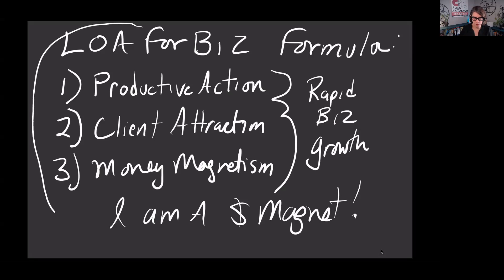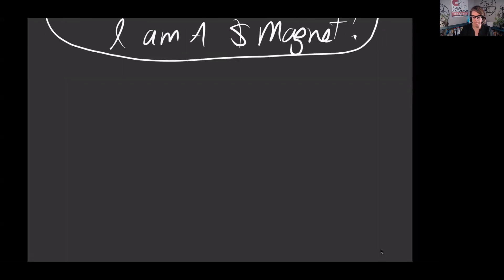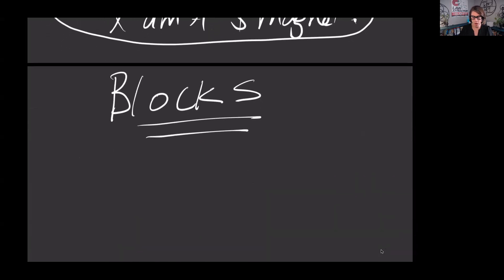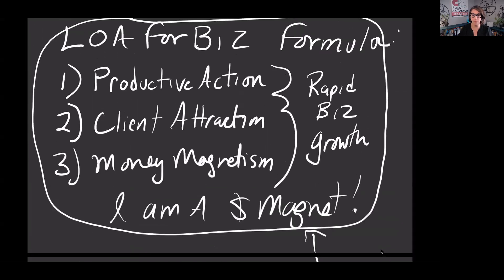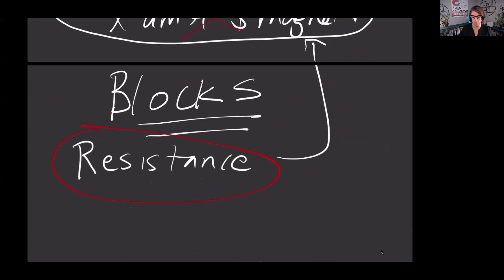The biggest problem I see in this formula is that people have what I call blocks — blocks to their success, blocks to their productive action, blocks to their money magnetism. This is what we can think of as resistance. When you have resistance, this causes blocked flow, and when you have blocked flow, you're not going to experience rapid business growth. You'll be stuck without client attraction and with a blocked money flow.